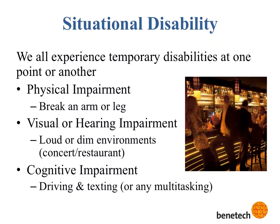There are also situational disabilities. We all experience these at one time or another — breaking an arm or a leg, loud or dim environments. For example, in a very dark restaurant, many people have had to pull out their phone flashlight to read the tiny print on dim menus. And of course, there's always multitasking. The big example is driving and texting — when you're doing both, you can't do either one perfectly well.